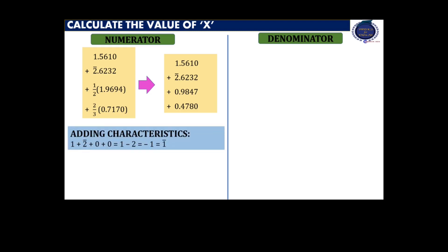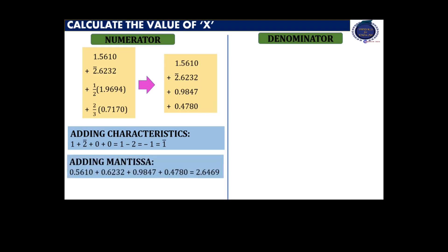First, adding the characteristics: 1 + bar 2 + 0 + 0, which is equal to 1 minus 2. Bar 2 is equal to minus 2, hence the answer is minus 1, which can be written as bar 1. Similarly for the mantissa, it can be added using simple rules of arithmetic. The answer is 2.6469. Combining the characteristic and mantissa for the numerator gives bar 1.6469.